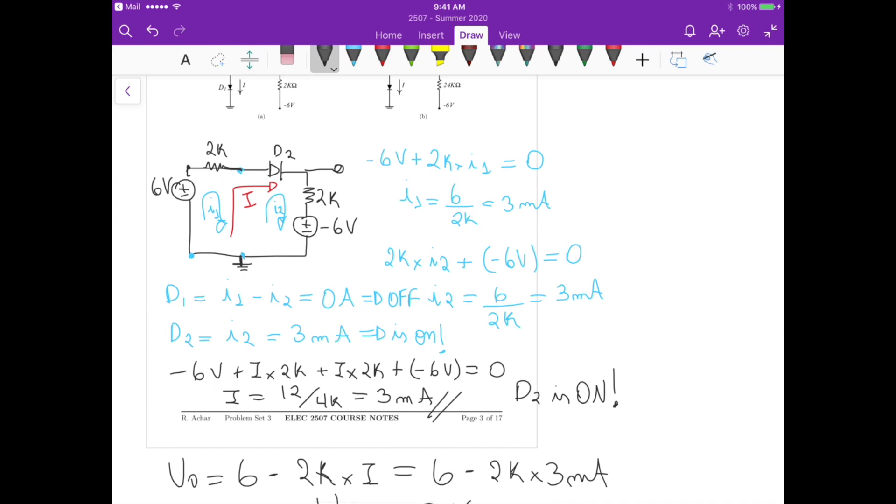Because we have 3 milliampere, we have 6 here, we have minus 6 here, we have 2K, 2K, in between we are taking the voltage V0, that's halfway across the resistance. So 2K, they're the same, so it gives us 0 volts. So that's it for this problem.